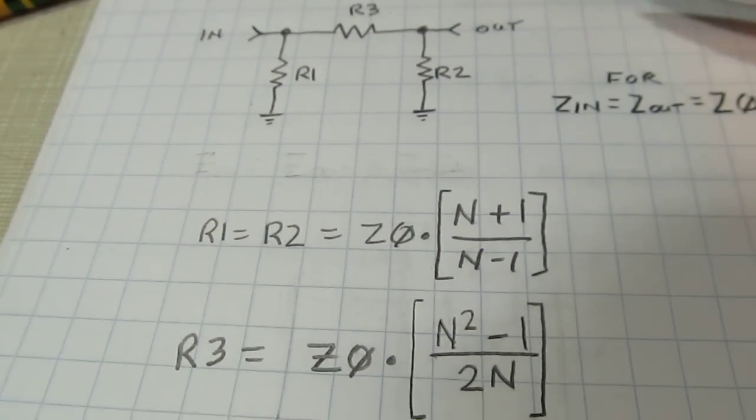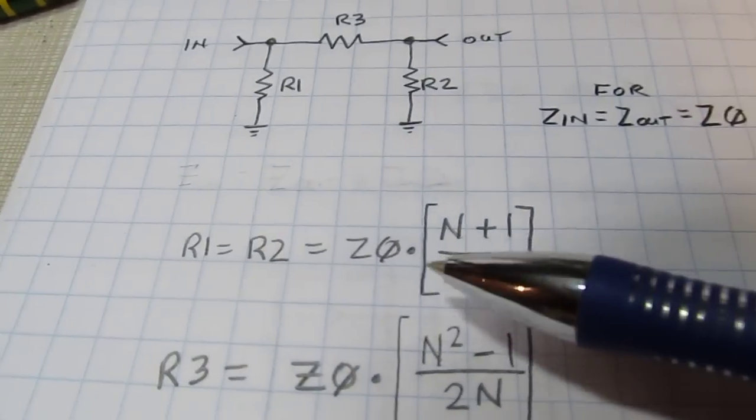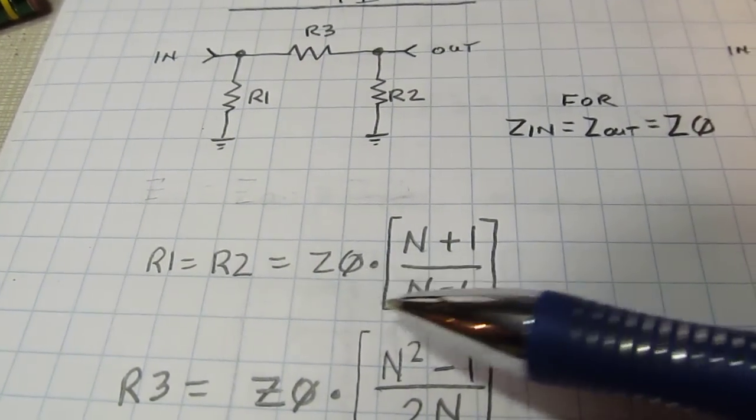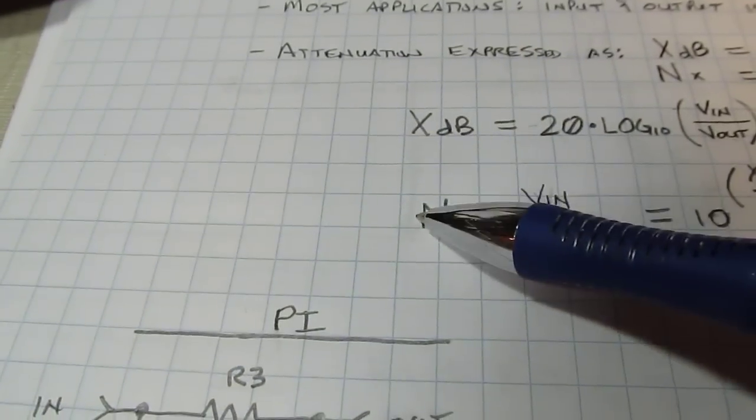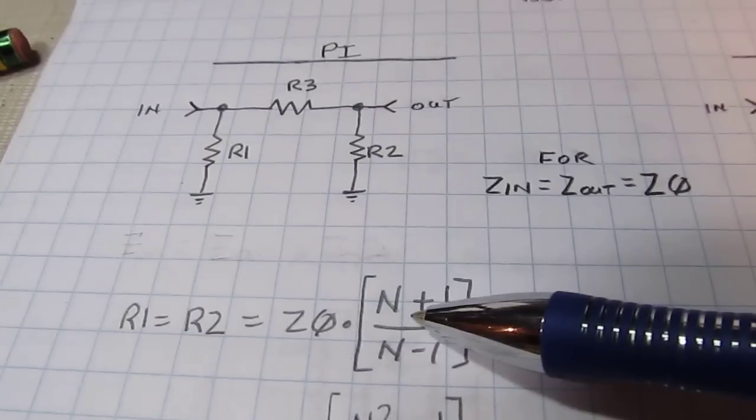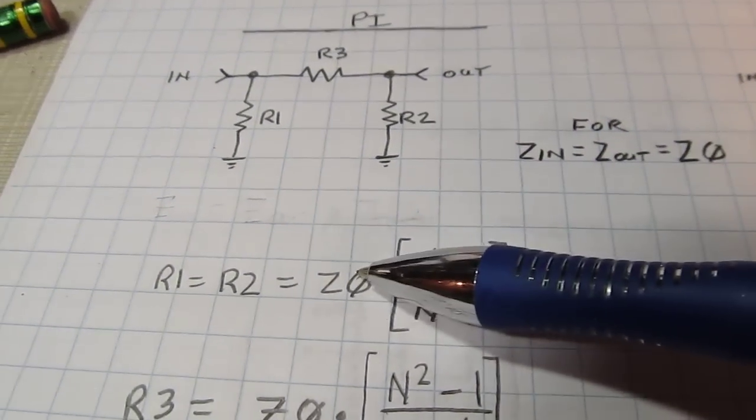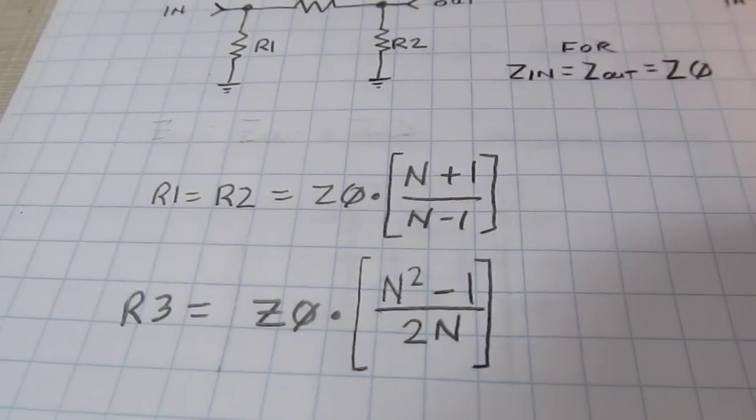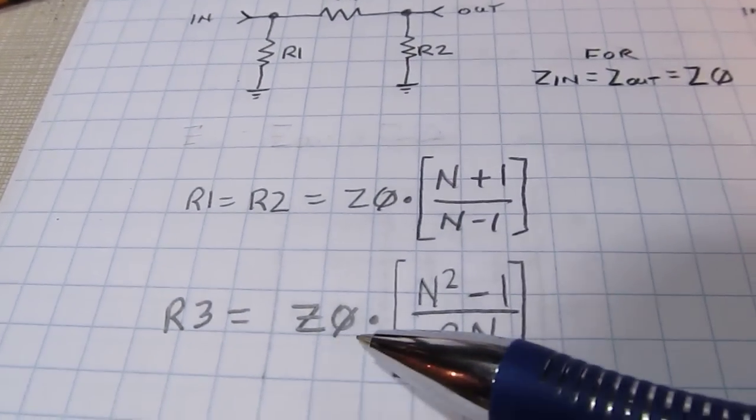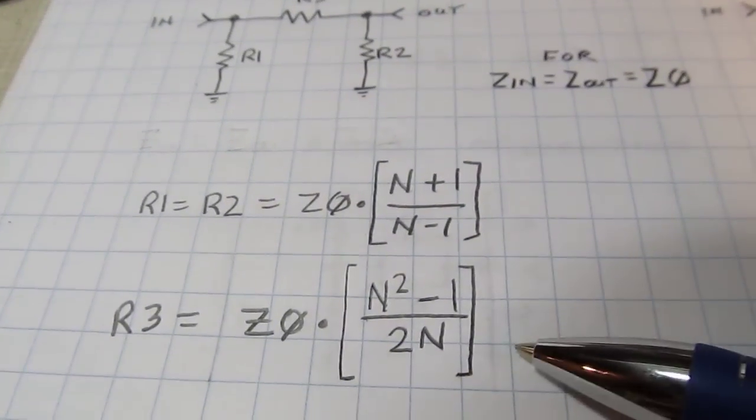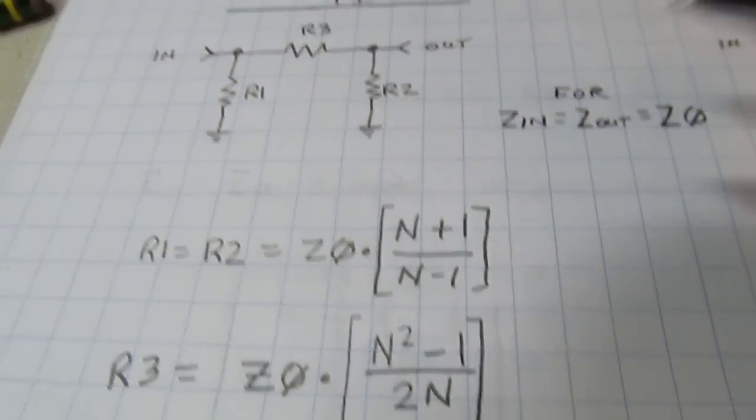The equations for calculating out these things are: R1 obviously equals R2, and it's simply equal to the characteristic impedance multiplied by this ratio. The value of N in this case would be 10, so 10 plus 1 and 10 minus 1, so it'd be 11 divided by 9 times 50 ohms, for example what I designed here. Then the series resistor is equal to this value - the characteristic impedance times this quantity (N squared minus 1) over 2N.